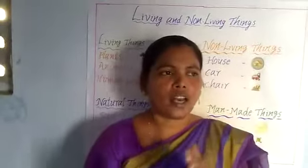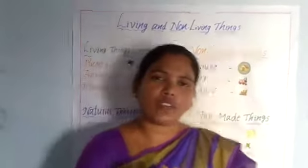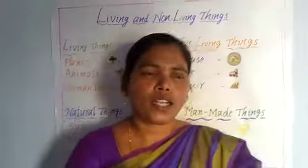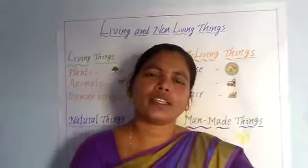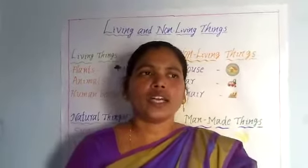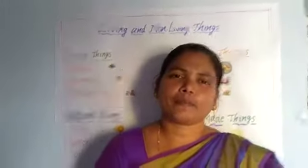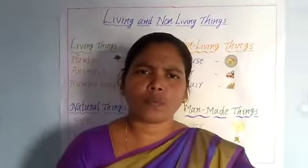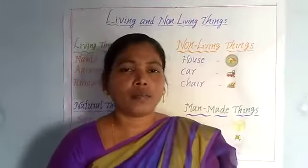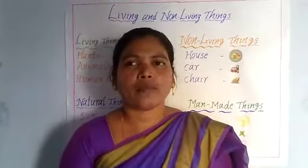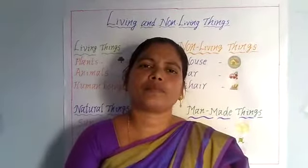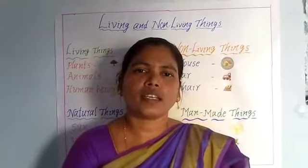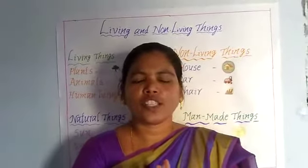Okay children, now I will ask some questions. What are living things? Plants, animals, and human beings — these are called living things. What are man-made things? Things in your home like cart, toys, door, and table — these are called man-made things. Do you understand this lesson? Thank you children.